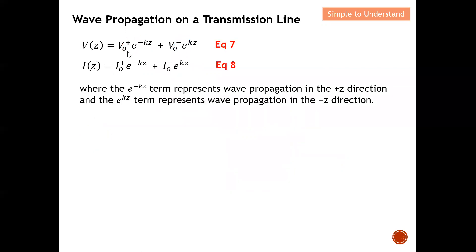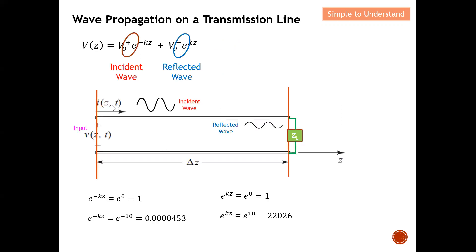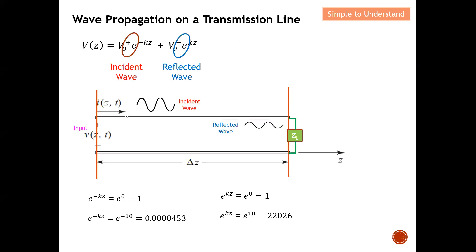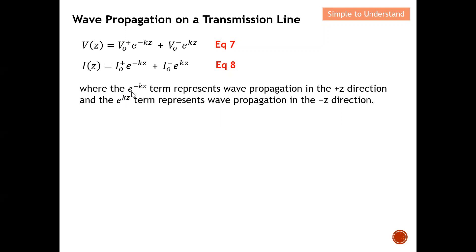After establishing this, I can write the voltage V(z) and current I(z) at any point on the transmission line. For voltage: e^(-kz) is the incident wave term and e^(+kz) is the reflected wave term. The same applies for current. To summarize: e^(-kz) represents a wave propagating in the plus-z direction (moving right), while e^(+kz) represents a wave propagating in the minus-z direction.